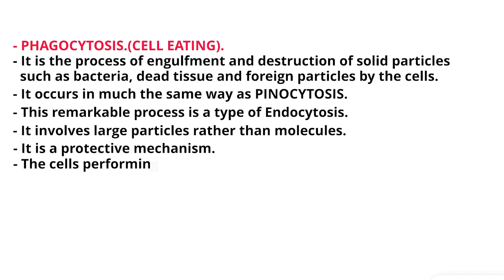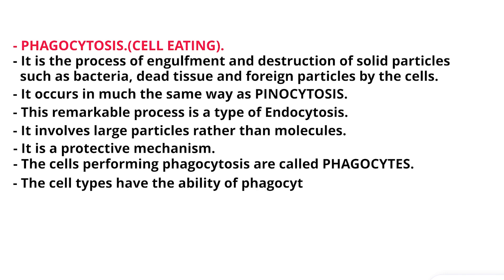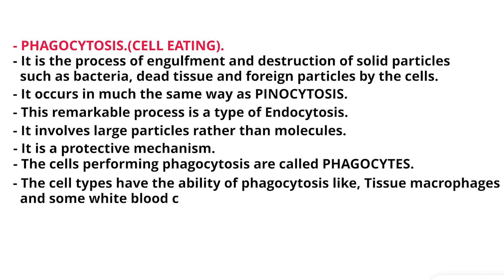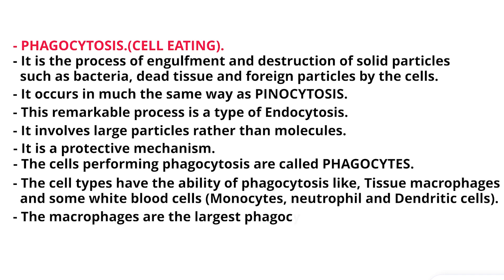The cells performing phagocytosis are called phagocytes. Cell types with the ability of phagocytosis include tissue macrophages and some white blood cells: monocytes, neutrophils, and dendritic cells. The macrophages are the largest phagocytic cells.